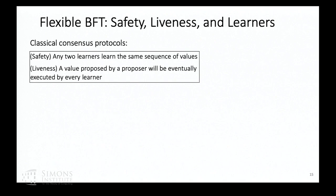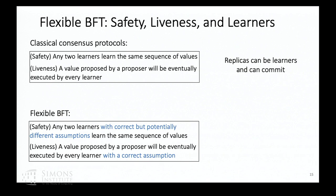Since we're thinking of clients with different assumptions, the standard definitions of safety and liveness don't quite apply, because you can have clients with incorrect assumptions. Earlier, safety meant any two server replicas learn the same sequence of values, and liveness meant a value proposed by a proposer will eventually be executed by every learner. In the new model, clients have different assumptions, but safety and liveness still hold for clients with correct assumptions. Because replicas do not know what client assumptions are, we think of clients as being the learners rather than replicas.